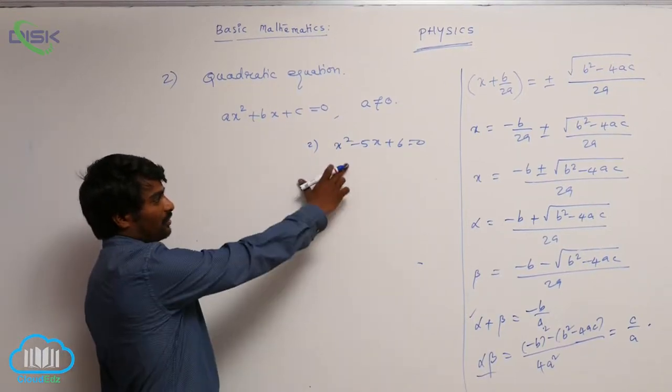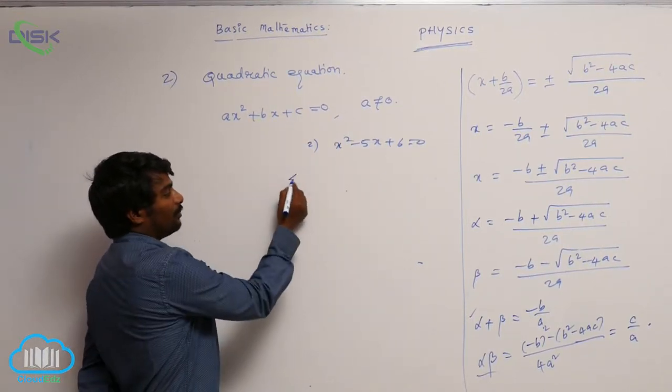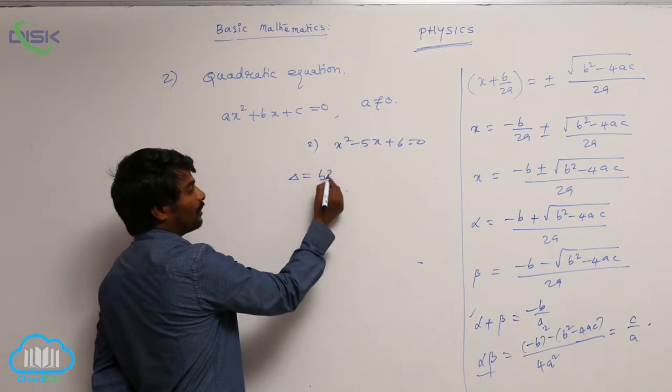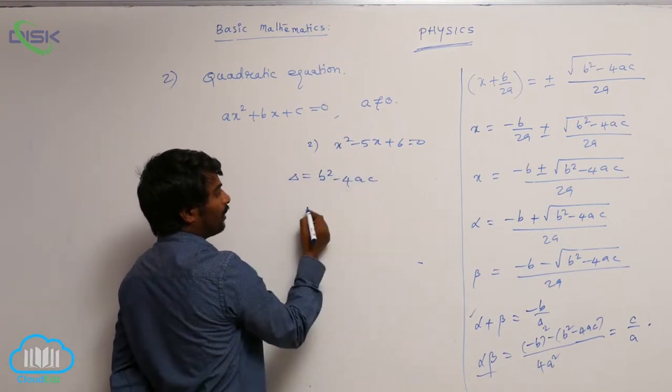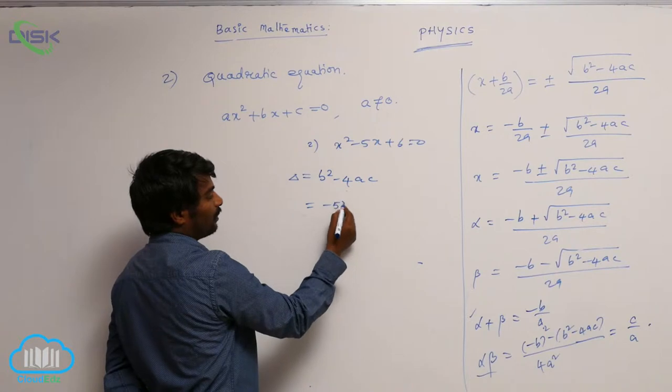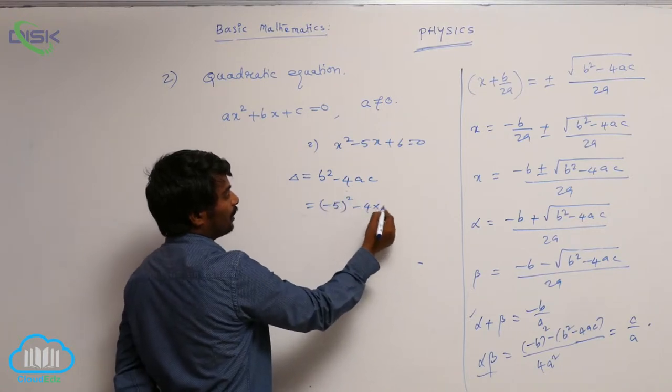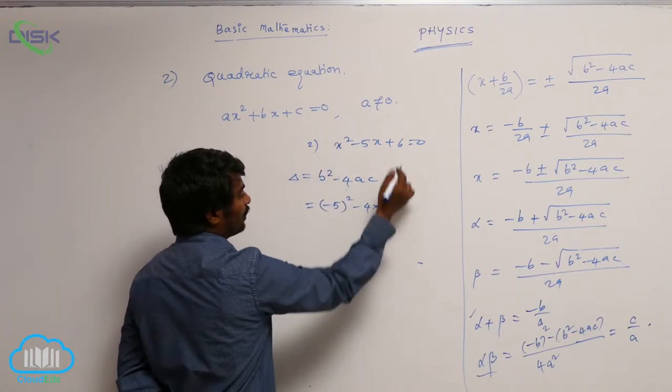Let us see the solution of second equation. Discriminant delta equal to b square minus 4ac, and b is minus 5 whole square minus 4a is 1 into c is 6.